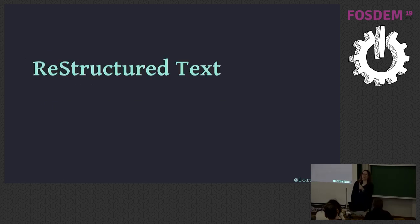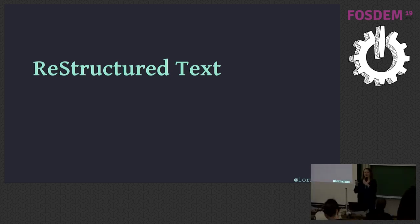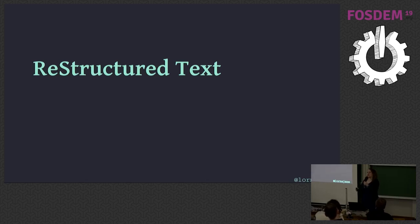In my opinion, restructured text is the king of markup formats. Probably you're familiar with a few others. Markdown seems to be ubiquitous, but if you want to do anything cool, you need lots of extensions and plugins — we end up writing GitHub Markdown or different flavors. With a Python audience, I'm guessing quite a few of you are already familiar with restructured text. It's a little bit more fully featured than Markdown.